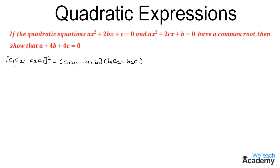From the given quadratic equations we have the value of a₁ as a, b₁ as 2b, and c₁ is c. Similarly from the second quadratic equation we have the values of a₂ as a, b₂ as 2c, and c₂ is b.